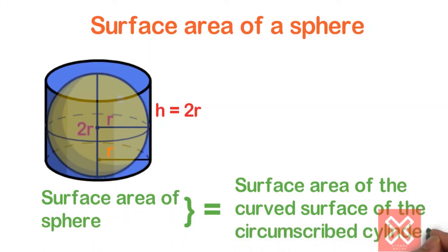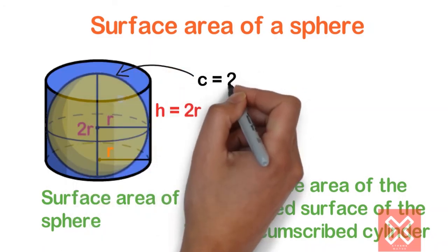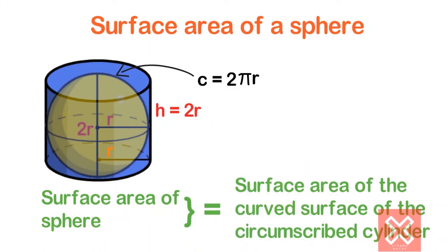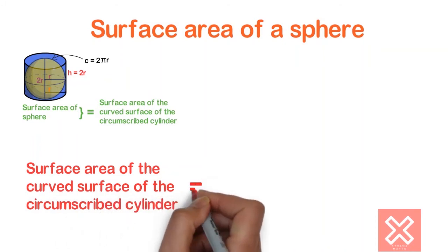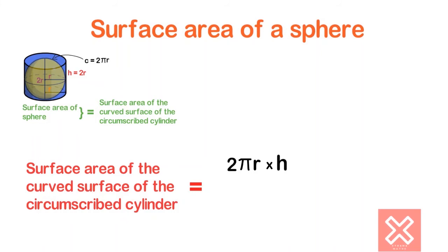We already know how to find the surface area of a cylinder. The circumference equals 2πR. So the surface area of the curved surface of the circumscribed cylinder equals 2πR × H. Here, H equals 2R because the height equals the diameter of the sphere.